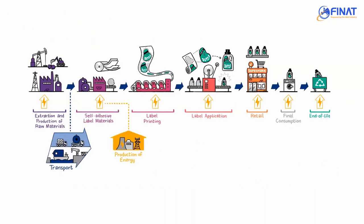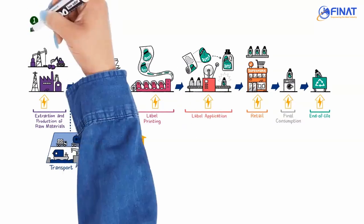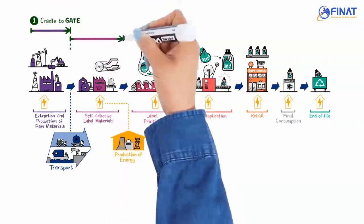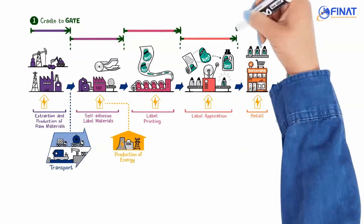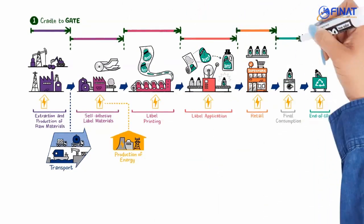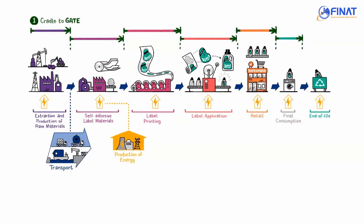When evaluating a PCF or LCA, it is important to identify what part of the life cycle of the product or process is being included in the evaluation. The three most common approaches are: Cradle to Gate — which covers evaluation of PCF and LCA from base raw material, the cradle, to the point at which the product is delivered, the factory gate. This approach is widely used by raw material producers.